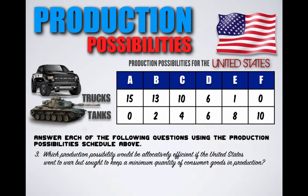Question 3: Which production possibility would be allocatively efficient if the United States went to war but sought to keep a minimum quantity of consumer goods in production? Allocative efficiency is defined as producing the optimal amount of goods and services that society needs and wants the most. In this case, the United States needs to defend itself in war yet wants to keep a minimum quantity of trucks in production. Looking at the production possibility schedule, the only combination that gives maximum tank production while keeping a minimal amount of trucks is combination E, making it the most allocatively efficient combination in this scenario.